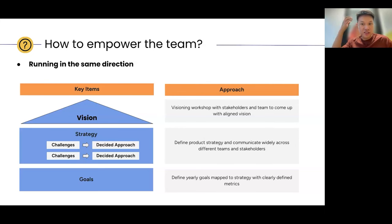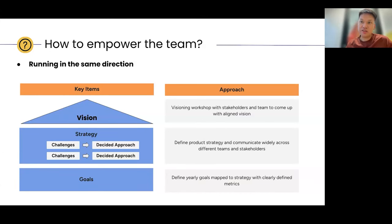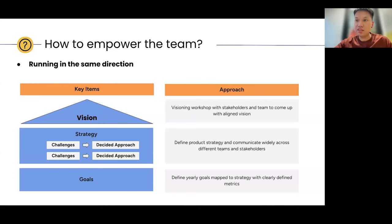Strategy is typically something you do more internally within the team — something you have to work on a lot yourself, which lays out the challenges and the approach we're going to take to solve them. We believe these challenges are stopping us from achieving our vision. Defining the product strategy and communicating it widely across different teams means that every time you present your work, or your engineers share what they'll do next sprint or quarter, people have that context and approach in the back of their heads.